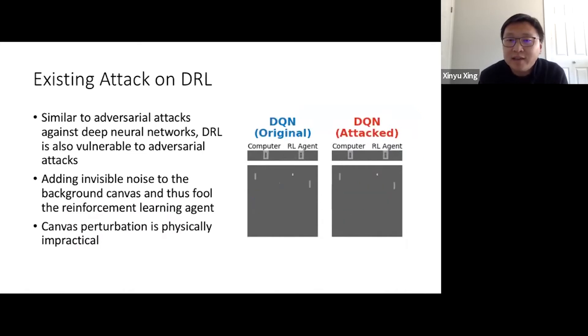On the right-hand side is an example of a Pong game. In this game, there are two parties. One is controlled by a computer program, the other is controlled by a reinforcement learning agent. As we can see on the left, without the attack, the reinforcement learning demonstrates decisive win over the computer program. However, after introducing invisible noise into the canvas background on the right, the reinforcement learning agent no longer demonstrates the same capability in this game.